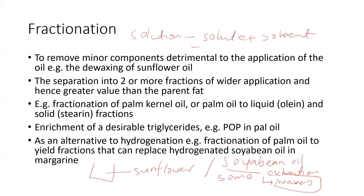We want to remove these waxes and have a clear transparent oil. This is possible through fractionation, where the oil is heated at a high temperature and then cooled. During cooling, the triglyceride molecules with different melting points crystallize and can be separated. The main objective here is to remove the minor components that are detrimental to the application of the oil, such as the removal of waxes from sunflower or other oils.